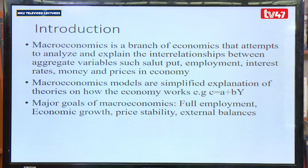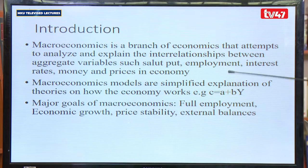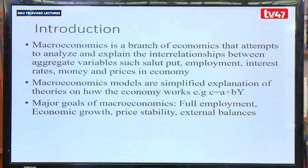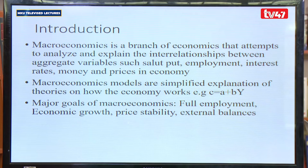We have different models. One is the consumption function, which we say is C equals A plus BY, meaning that consumption is a function of income. From mathematics, A is a constant and B is a parameter which measures the change. So if we increase income by 1% or 1 shilling, we expect that consumption will change by an amount of B. By having a model like this, it simplifies the theory — instead of writing a whole paragraph to explain how consumption is related with income, we can present it simply by a model.